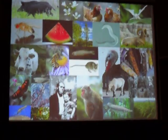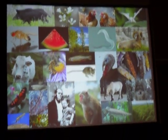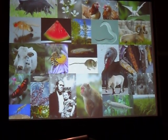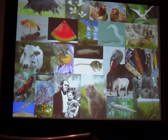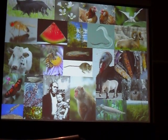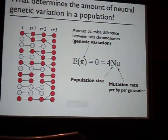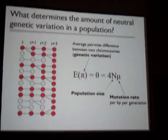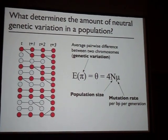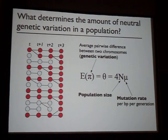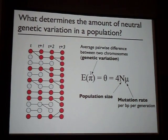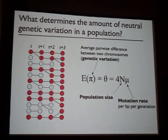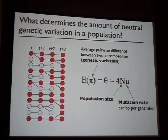Our intuition from neutral theory of molecular evolution is that species with very large population sizes, like humans, should have a lot of neutral diversity, and species with relatively small population sizes, like the bighorn sheep, should have relatively little diversity. The prediction from basic neutral theory is that the amount of neutral genetic diversity within a population — shown here as the average pairwise difference between two chromosomes — should be determined by the population size and the mutation rate.